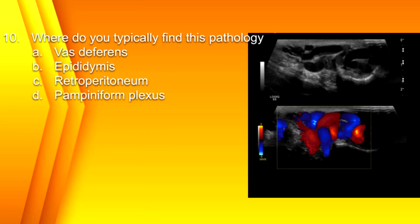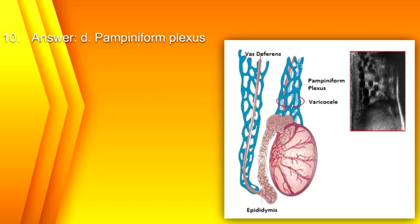Number 10. Where do you typically find this pathology? A. Vas deferens, B. Epididymis, C. Retroperitoneum, or D. Pampiniform plexus? The answer is D. Pampiniform plexus — that is a varicocele. Here you can see the testicle with the epididymis. The pampiniform plexus is this network of blood vessels that goes from the testicle into the inguinal canal, following the spermatic cord. In a patient with varicocele, you can increase blood flow with color Doppler and pulse wave Doppler by having the patient do a Valsalva maneuver.